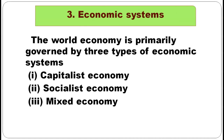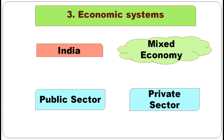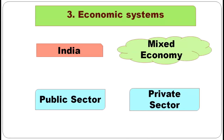Coming to economic systems — the world economy is governed by three types: capitalist economy, socialist economy, and mixed economy. In the case of India, we have a mixed economy, meaning there is co-existence of public sector and private sector. Both public and private sector enterprises can function in a mixed economy like India.